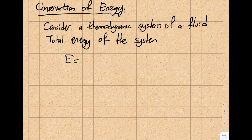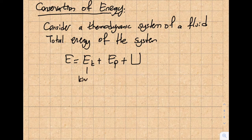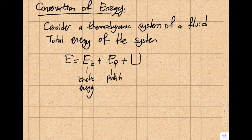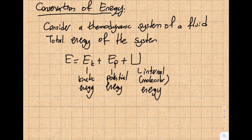The total energy of the system has three components. The first component is kinetic energy, which you're familiar with. The second is potential energy, also familiar. The last component may be less familiar — that is the internal energy, capital U. So we have kinetic energy, potential energy, and internal energy. Some people call this molecular energy. Let's talk a little bit about this internal energy; the other components are fairly clear.